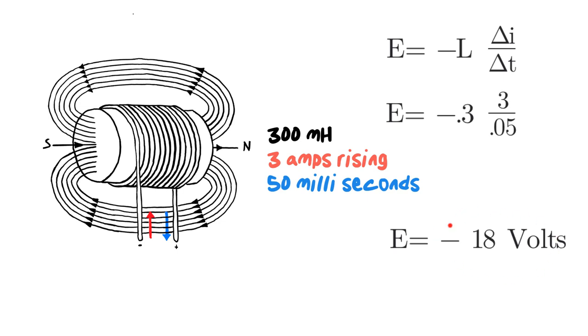Negative 18 volts. Now it's important that we understand that that negative 18 volts means that this voltage is going to be opposing the source voltage. It's pushing back on it. And when we get into inductive reactance discussions, that's important to understand.